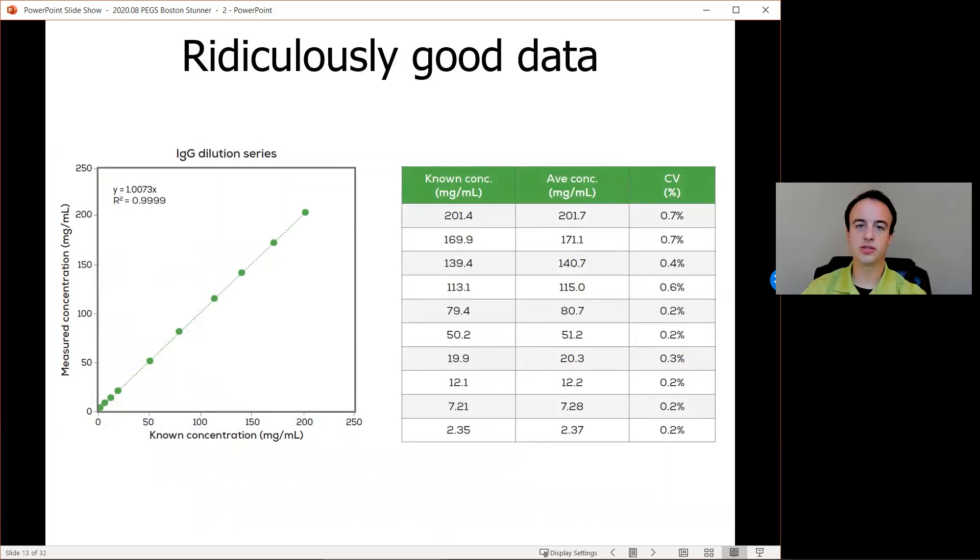If we apply those results to determine concentration, you can see the spot-on accuracy within 2% by comparing the known average measured concentrations and the precision within 1% by looking at the CVs of those measured values. Those are shown in the table on the right and looking at the left we again see an R-squared value of better than 0.9999.